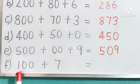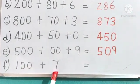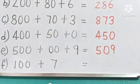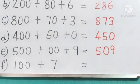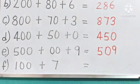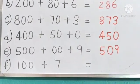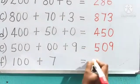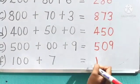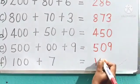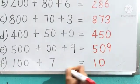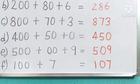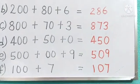Question F: We have 100 in the hundreds place and 7 in the ones place. Now where is the tens place number? It is not given. If the tens place number is not given, we always take it as 0. So 1 is in the hundreds place, 0 in the tens place, and 7 in the ones place. So the number is 107.